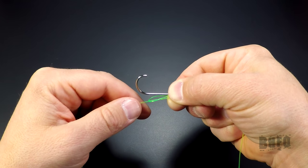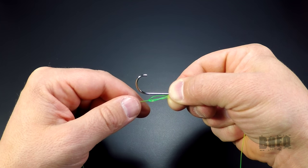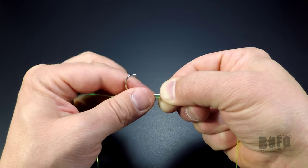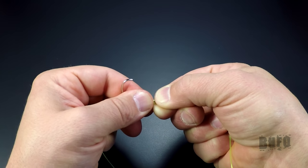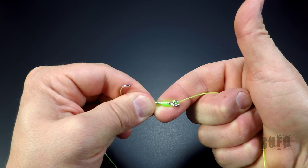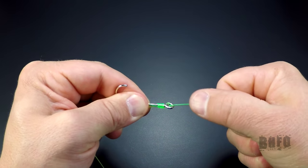After the line has been lubricated, it's time to cinch up the knot. Pinch the tag and the loop to the shank close to the wraps. Pull the main line until the knot is nice and tight around the shank.